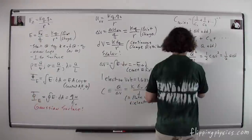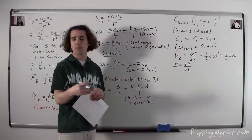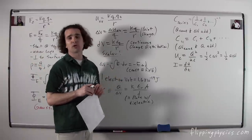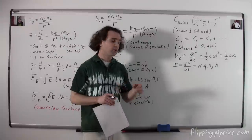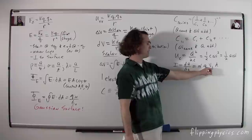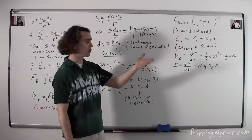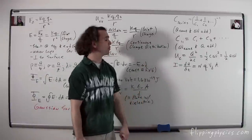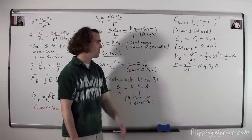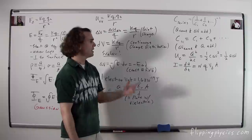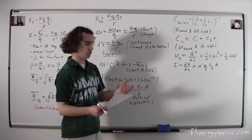Current is defined as the derivative of charge as a function of time — literally charge per unit time. We also have another equation: current equals the charge carrier density n, times the charge per carrier q, times the drift velocity v_d, times the cross-sectional area A. The drift velocity is actually very small. The cross-sectional area is the area normal to the direction of net travel of the drift velocity.